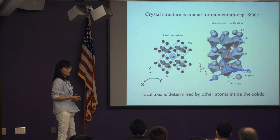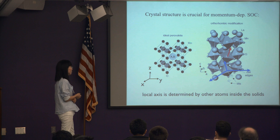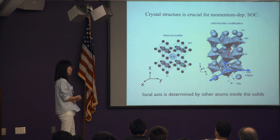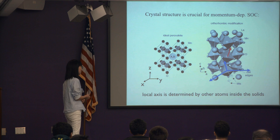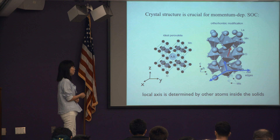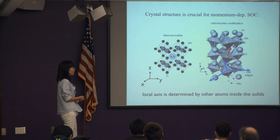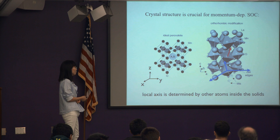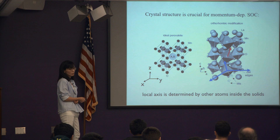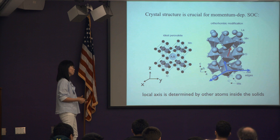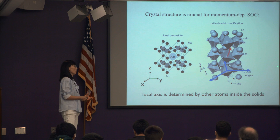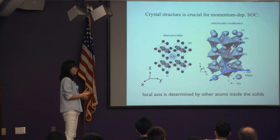What determines whether px and pz hoppings are zero or finite is the crystal structure. In an ideal perovskite with cubic symmetry, the hopping integral between px and pz is zero. But at low temperature, many systems show orthorhombic distortions — manganese or cuprates, for example — determined by surrounding atoms. The transition metal is surrounded by oxygens that tilt at low temperature, breaking crystal symmetry from cubic to tetragonal to orthorhombic. Once those symmetries are broken, the local axes depend on the surrounding atoms: blue octahedra tilt one way and red the other in a staggered pattern.